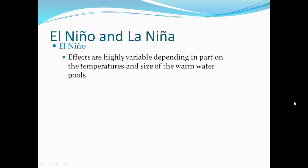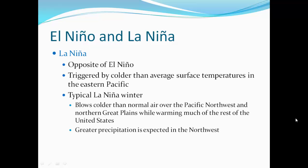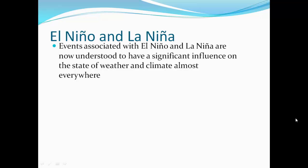La Niña is the opposite of El Niño, triggered by colder than average surface temperatures in the eastern Pacific. A typical La Niña winter blows colder than normal air over the Pacific Northwest through the Great Plains, while warming much of the rest of the United States, with greater precipitation expected in the northwest. El Niño and La Niña events are now understood to have significant influence on weather and climate almost everywhere.